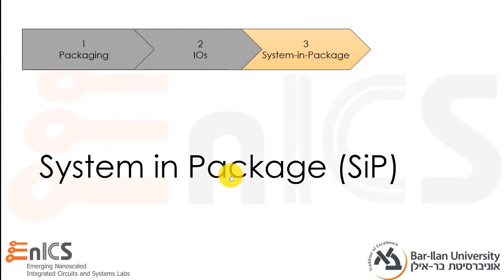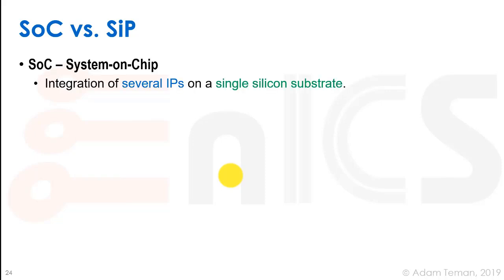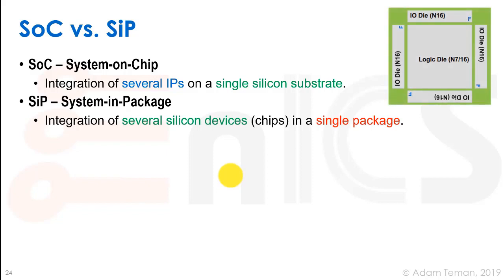As a final short section, I would like to discuss system in package. SOC, or system on chip, versus system in package — what's the difference? An SOC is the integration of several IPs on a single silicon substrate. So if we take a core and some accelerators or some different types of protocol and put it on one chip, that's called a system on chip.